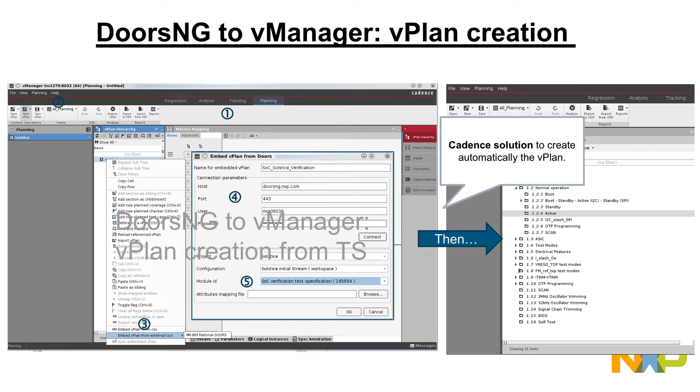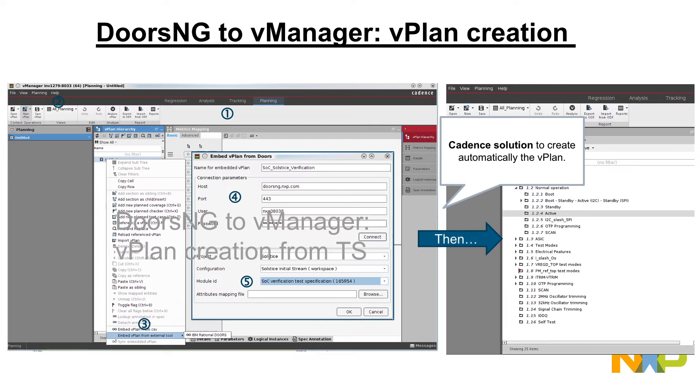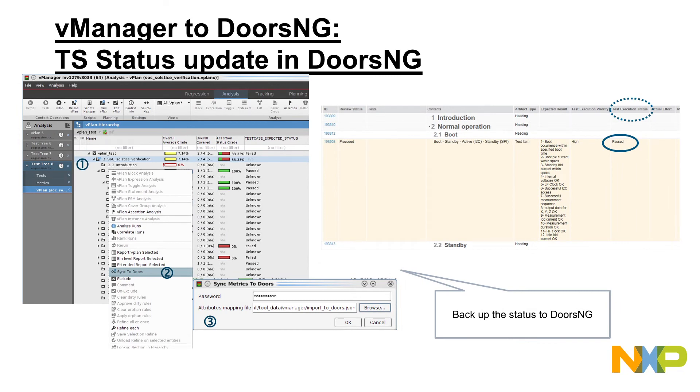It takes all the test specifications from DOORS NG, runs the regressions, and updates the pass and fail status on DOORS. So you have complete traceability where you have a design requirement, where you have a TS requirement, and you can see that your verification is complete or not.